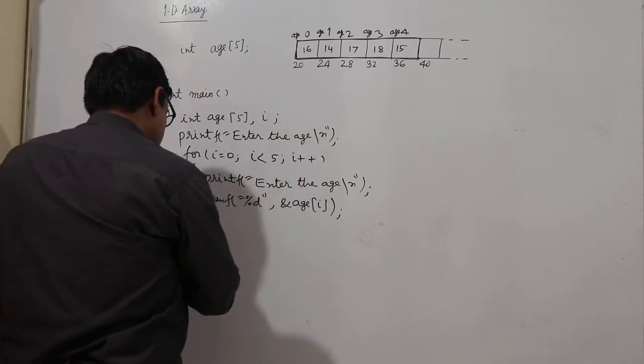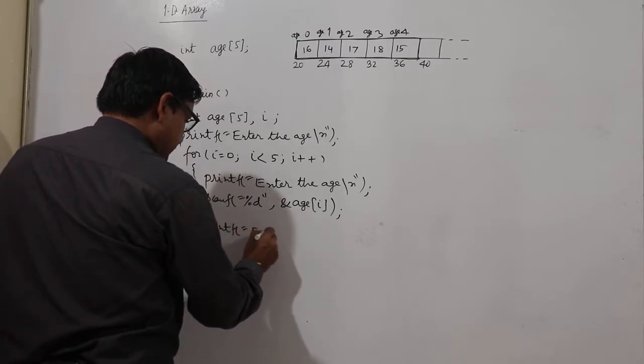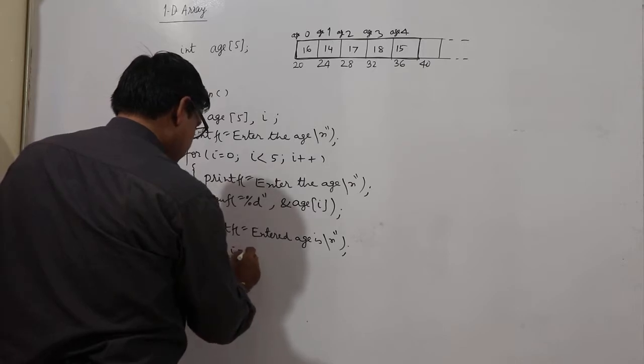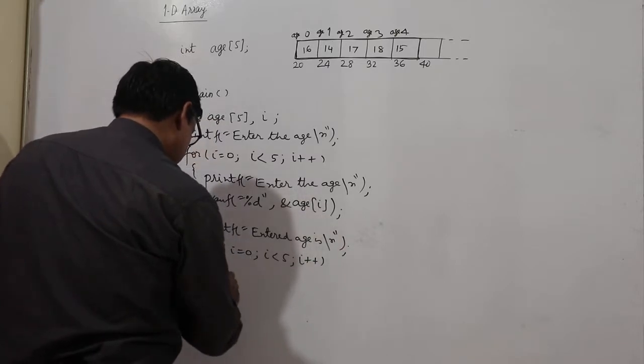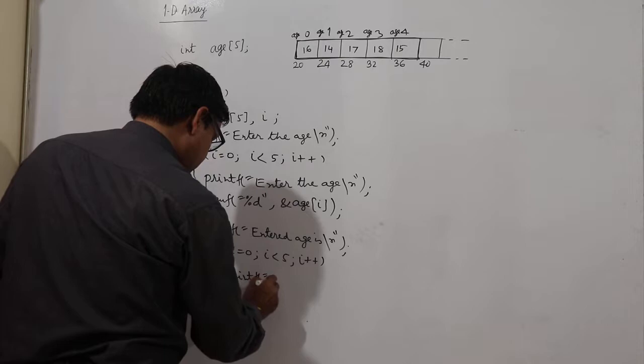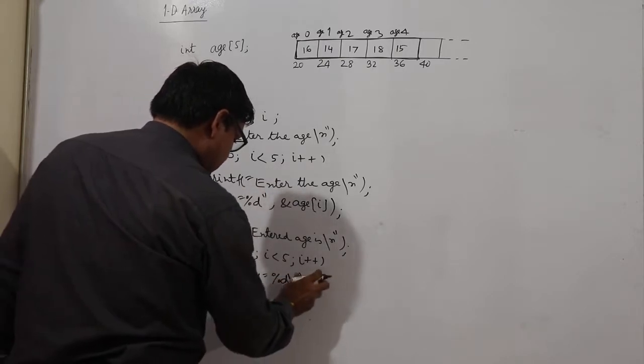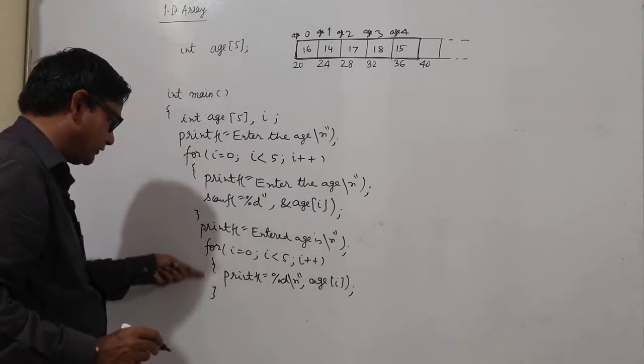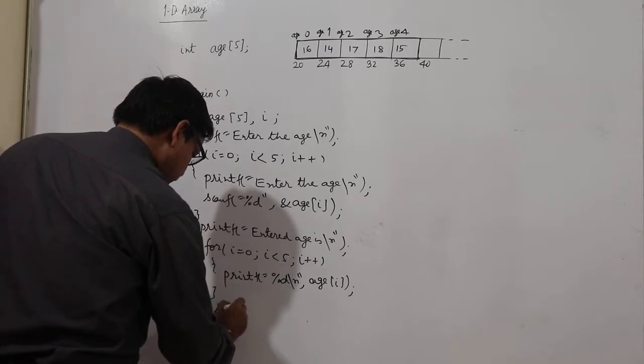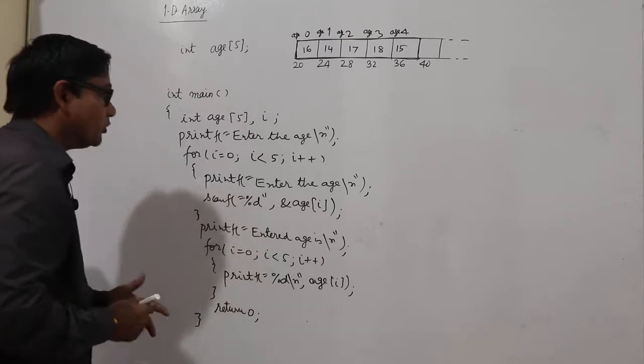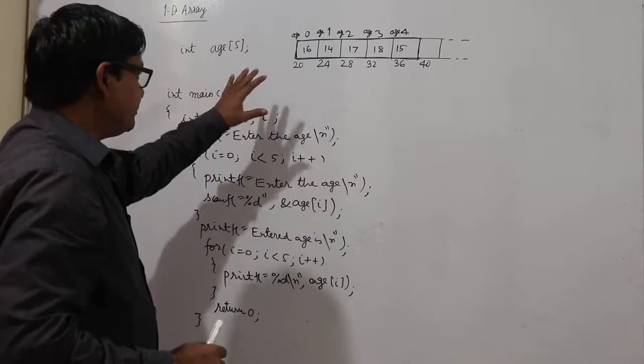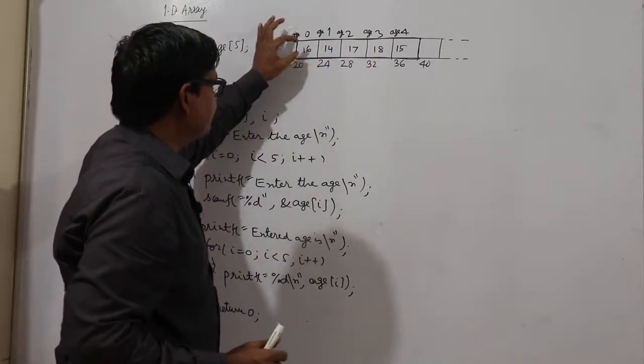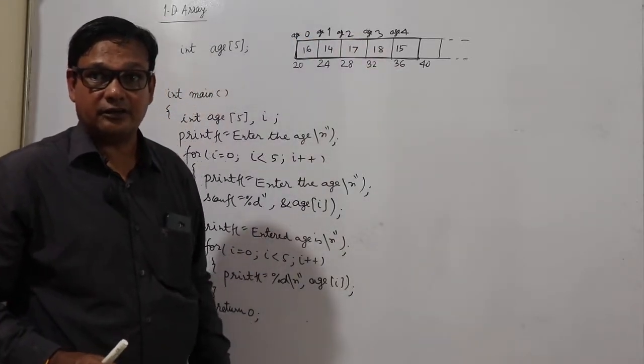Printf, entered ages is. For i equal to 0, i less than 5, i plus plus, printf percent d slash n, age i. This is the end of this for loop, and here return 0, and this is the end of the main function. In this way we can input some values and we can see here we are inputting these values continuously. These are stored at continuous memory locations.